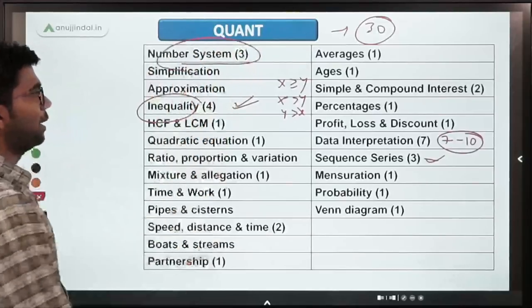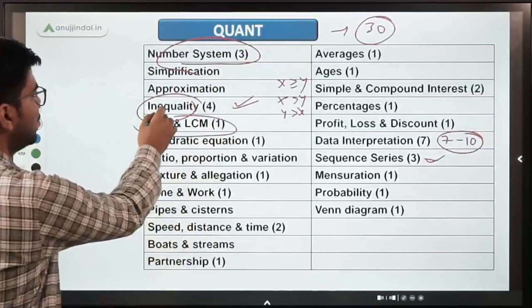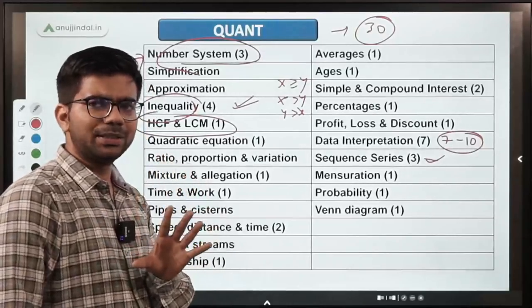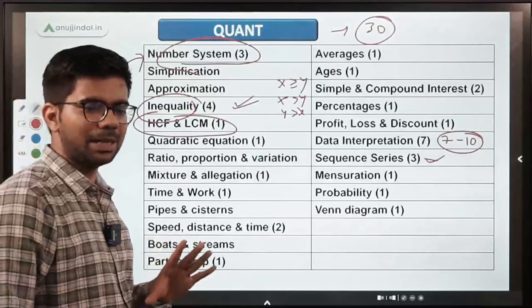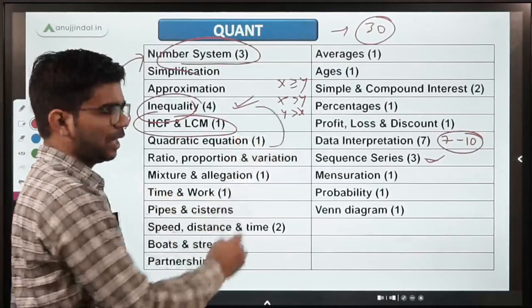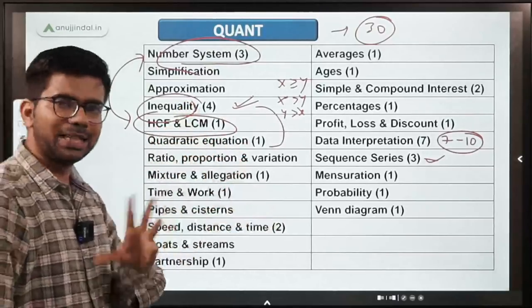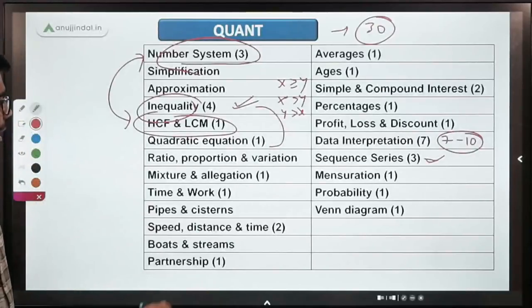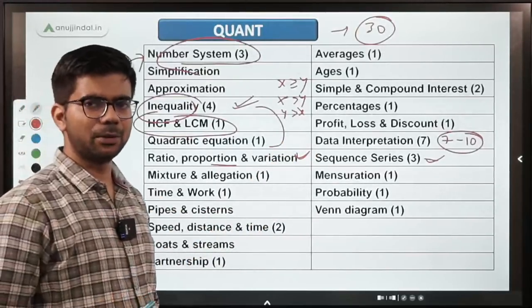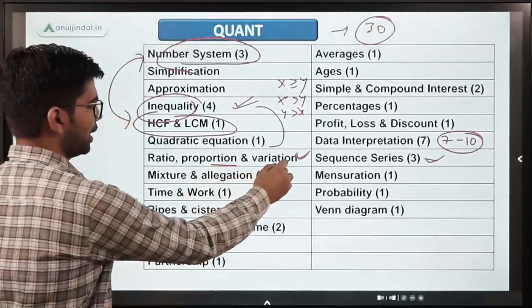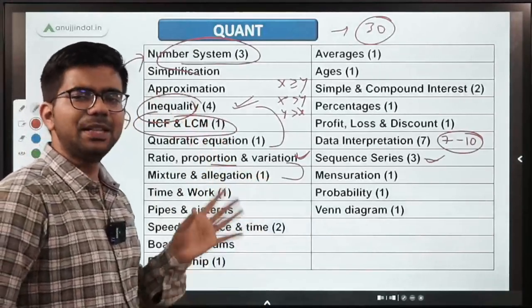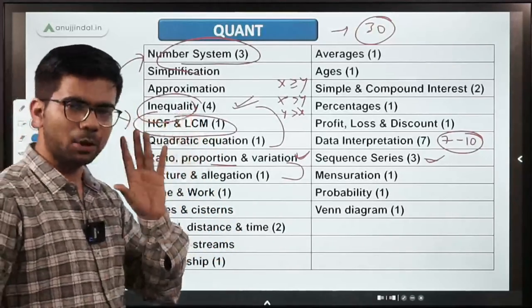Number system and HCF/LCM are very connected — you can expect 3 to 4 questions combined. Quadratic equation combined with inequality gives you around 3 to 5 questions. Ratio proportion and variation are very important, and combined with mixture allegation you can expect 2 to 3 questions. It varies every year, but we can get a broad idea.